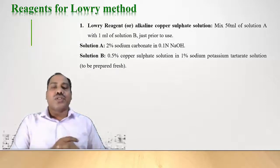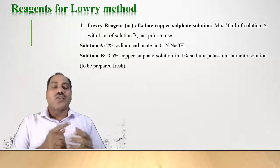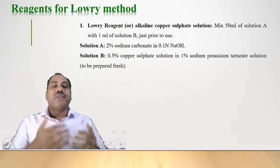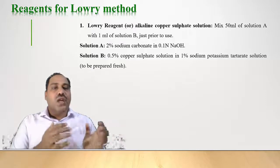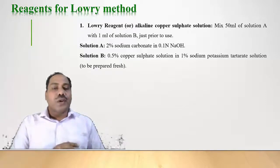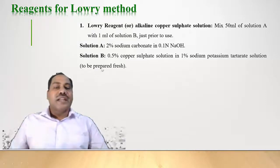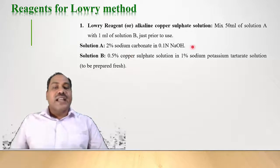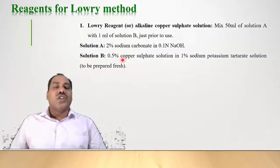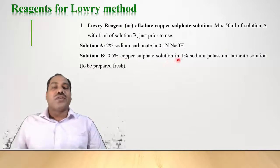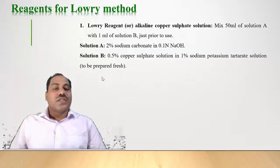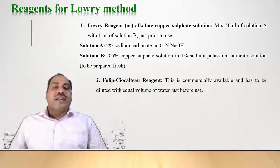The first reagent is the Lowry reagent, also known as alkaline copper sulfate solution. This reagent is a combination of two solutions — Solution A and Solution B — in a ratio of 50:1. Solution A consists of 2.5% sodium carbonate in 1% NaOH solution. Solution B consists of 0.5% copper sulfate solution in 1% sodium potassium tartarate solution. It is always prepared fresh.